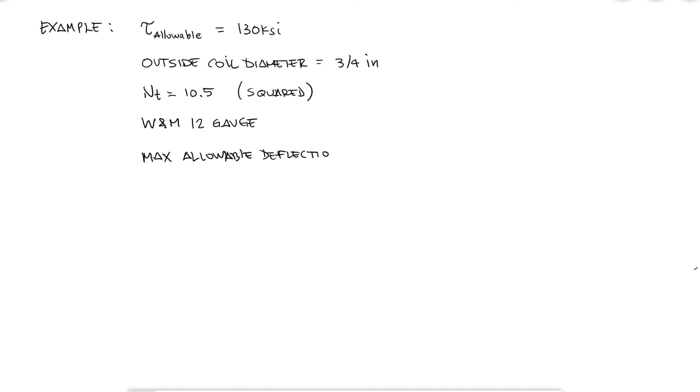As mentioned before, we will cover the shearing yield strength calculations in the following video, which is the value we never want our spring stress to exceed when a spring is under operation, but for today's quick example, we'll use a maximum allowable shearing stress value of 130 ksi. If a helical compression spring has an outside coil diameter of 3 fourths of an inch, 10.5 total coils with squared ends, and is made with a 12 gauge Washburn and Moen wire size, what would the maximum allowable deflection be so that the spring doesn't fail?